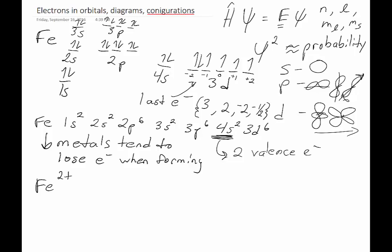So iron two plus would have an electron configuration of 1s2, 2s2, 2p6, 3s2, 3p6, 3d6.